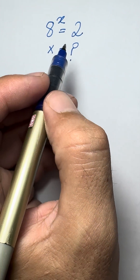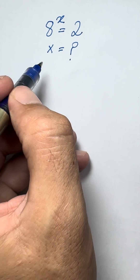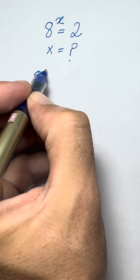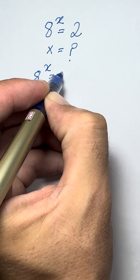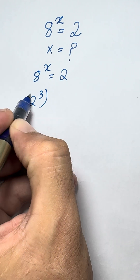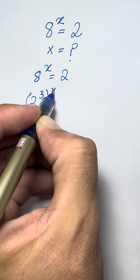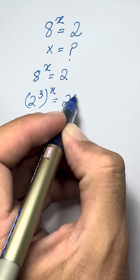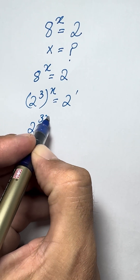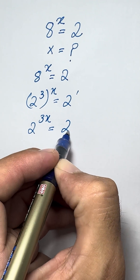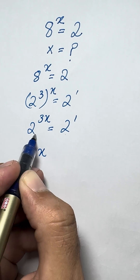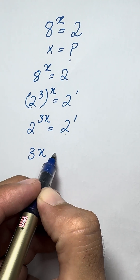How to find the value of X. We have 8 to the power X equal to 2. We can rewrite this as 2 to the power 3, to the power X, equal to 2 to the power 1. So 2 to the power 3X equals 2 to the power 1. Since the bases are the same, the exponents will be equal: 3X equals 1.